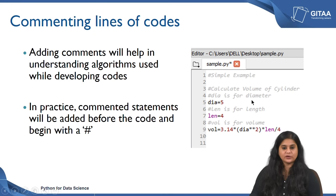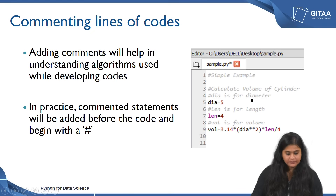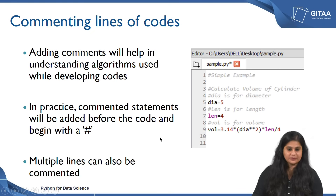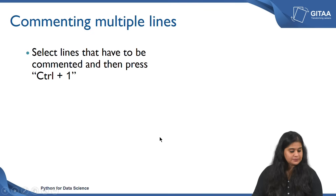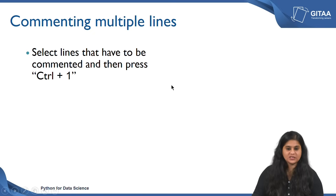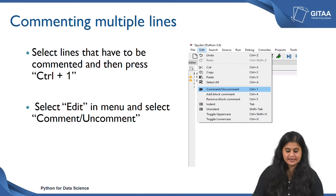This is a very good practice because if you are going to give your code to someone or revisit it in the future, you might want to know what you have done and why. You can also comment multiple lines instead of just one line. To comment multiple lines, select the lines that have to be commented and then press Control+1. An alternative way is to go to the Edit option in the menu and then select Comment or Uncomment Lines — you can see the keyboard shortcut also displayed adjacent to this option.